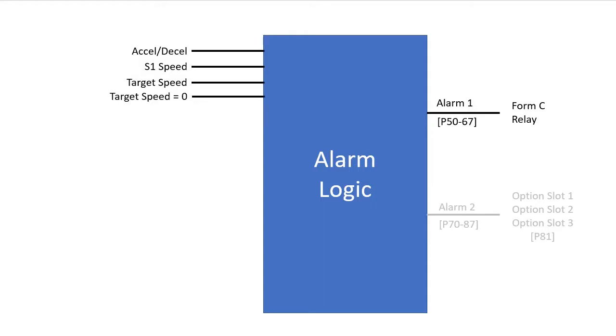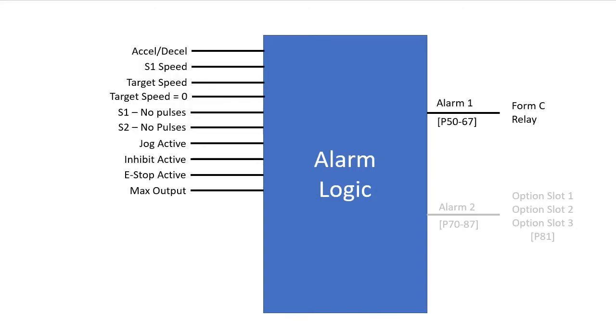If the sensor pulses stop, if the master pulses stop if you are in follower mode, if jog, inhibit or e-stop are enabled, if the drive's output is maxed out, or if the drive is running.